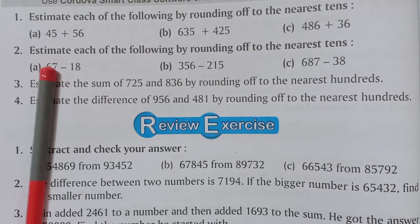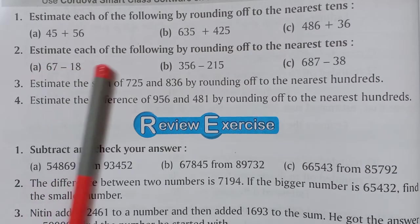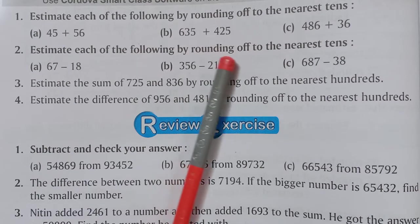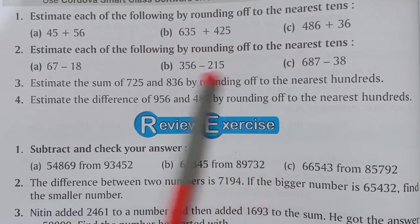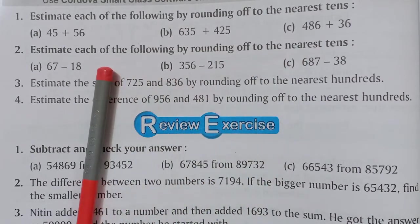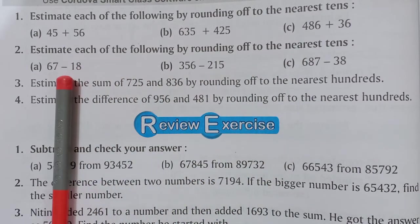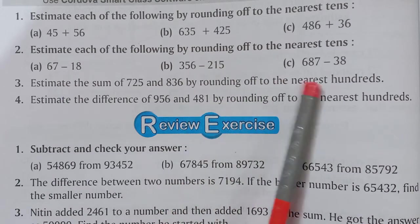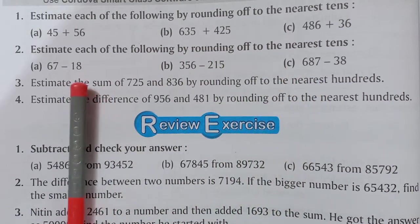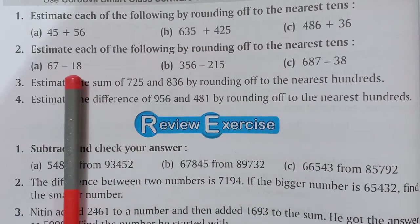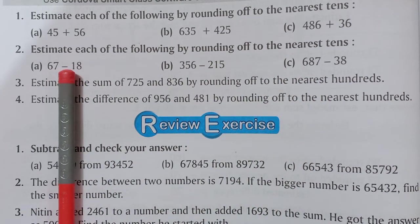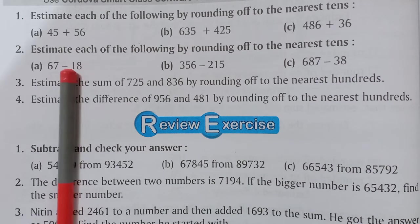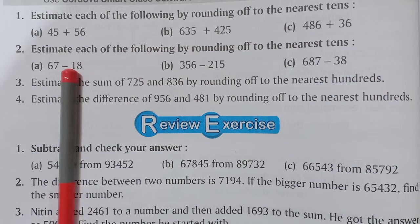Question number 2: estimate each of the following by rounding off to the nearest tens. Now we have to do subtraction — 3 questions we have to subtract, and we have to round off to the nearest tens.